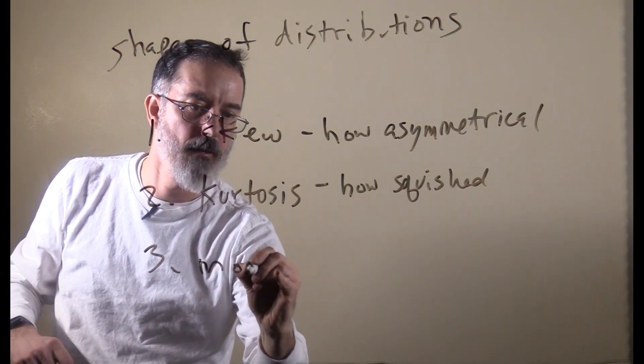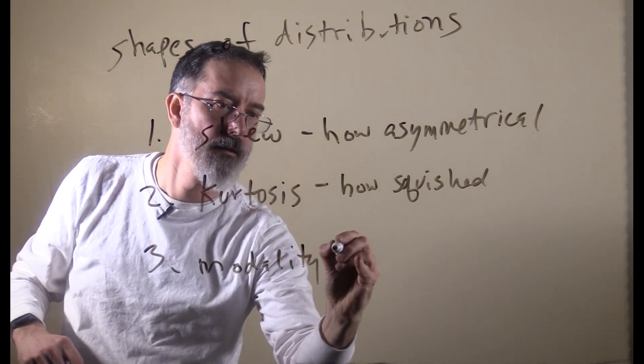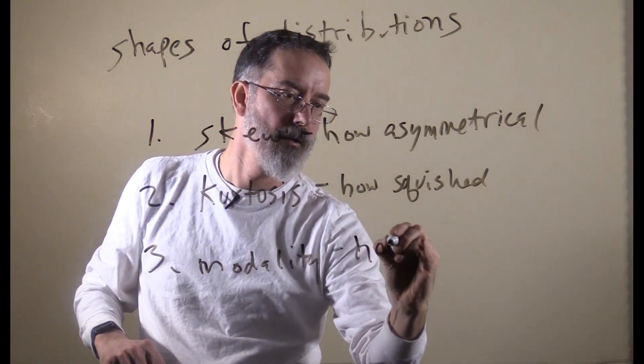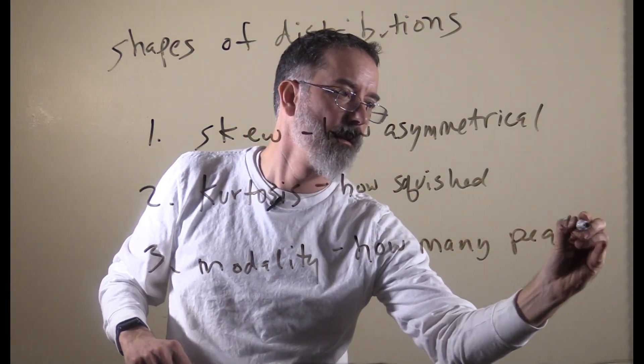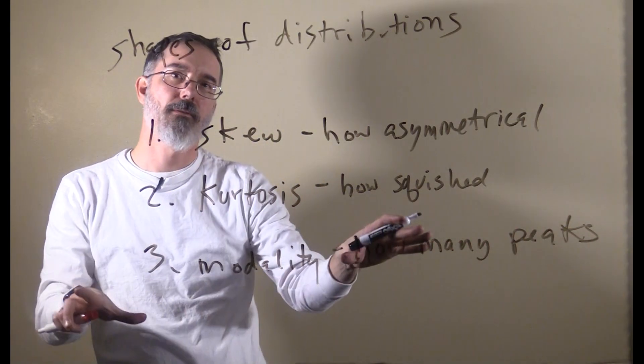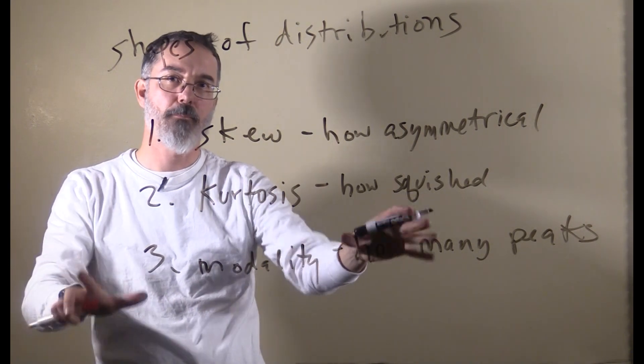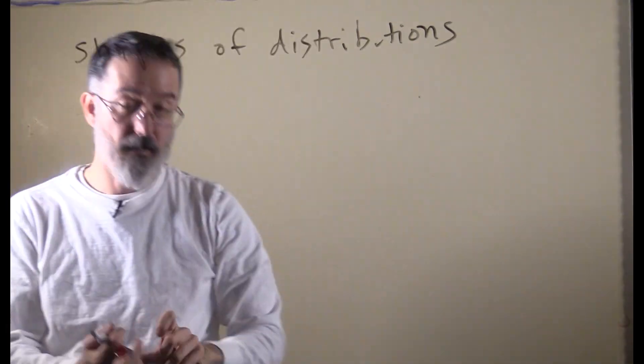Then there is modality, which is how many peaks a distribution has. I will go through each of these separately in more detail.